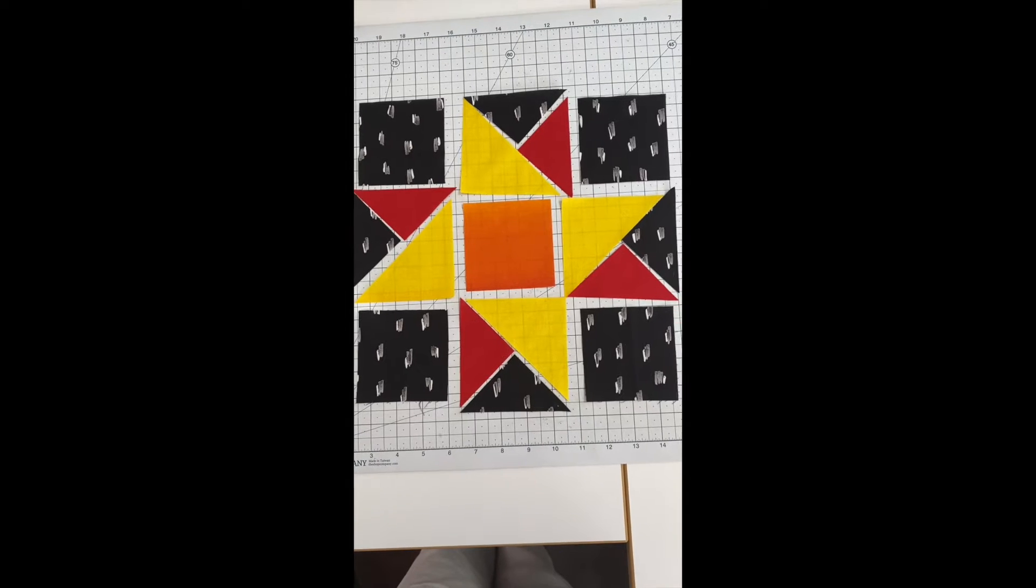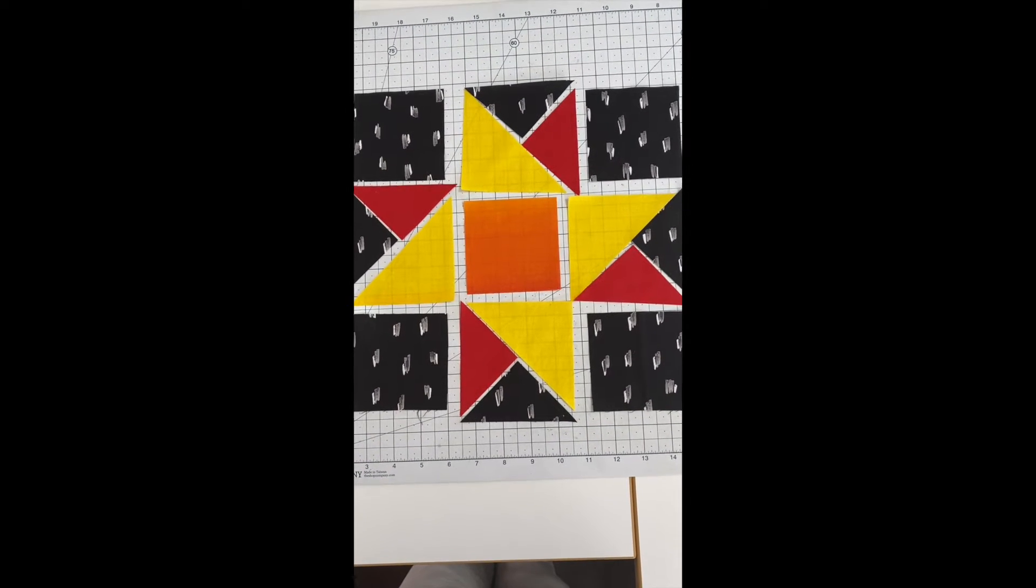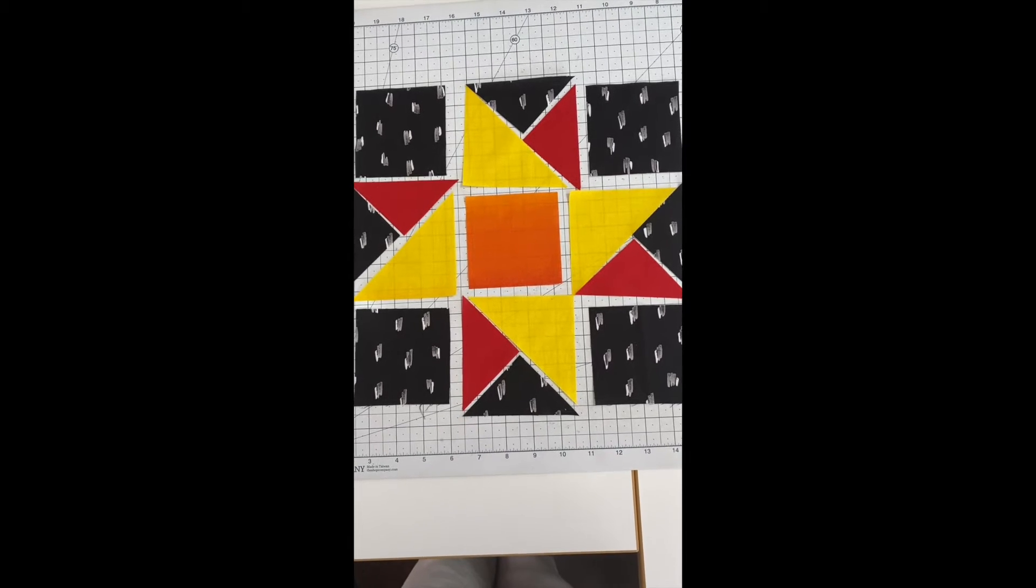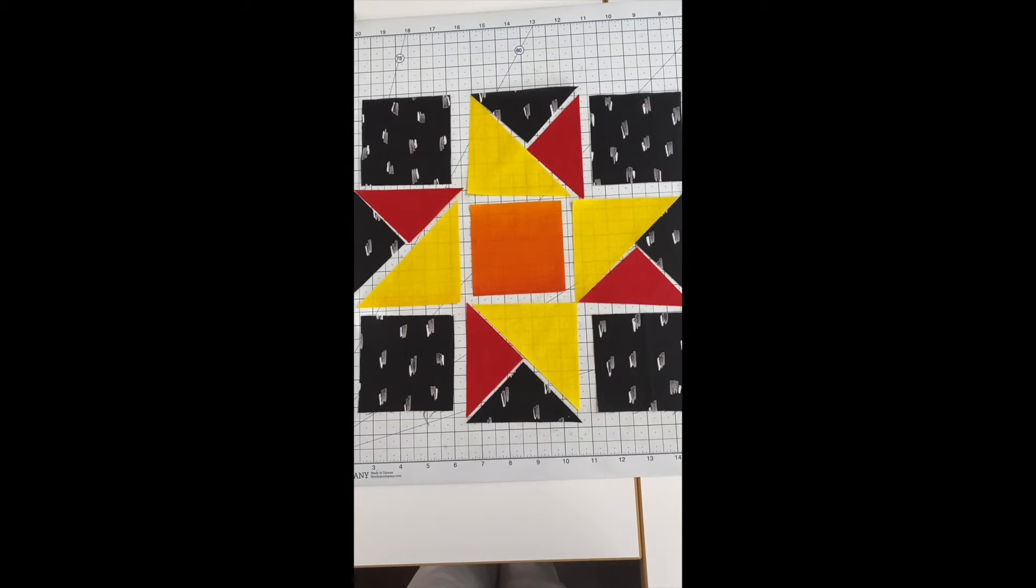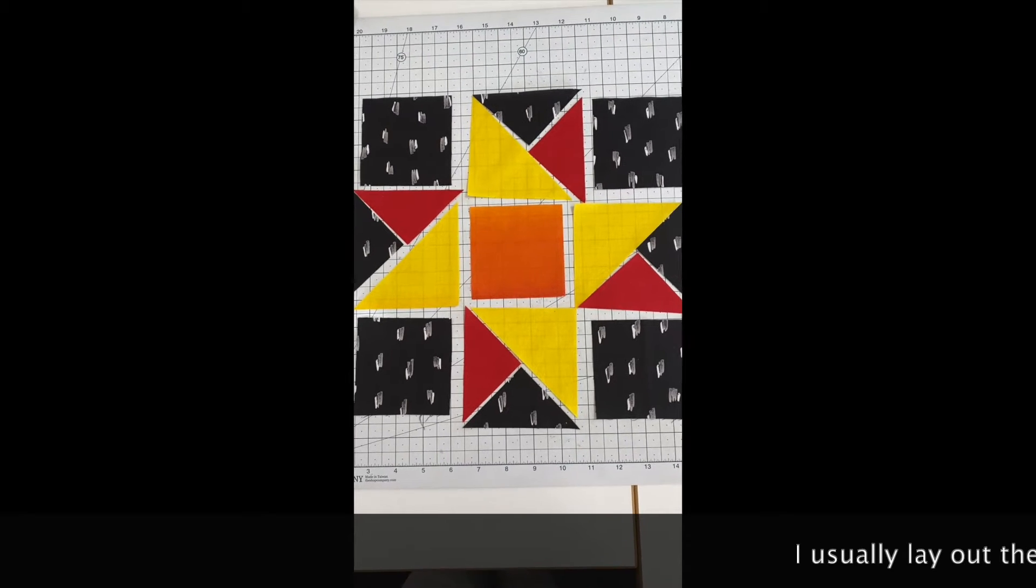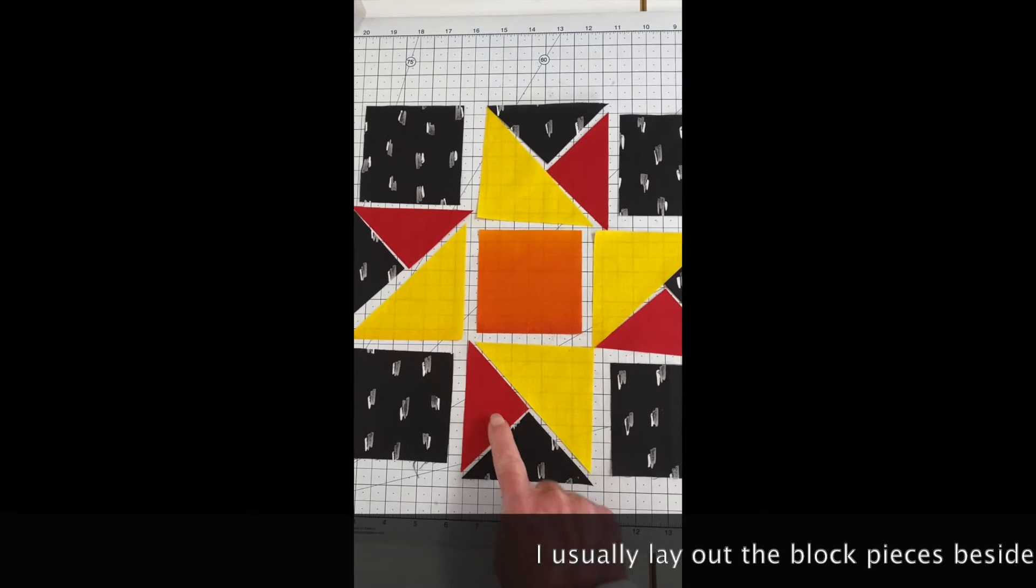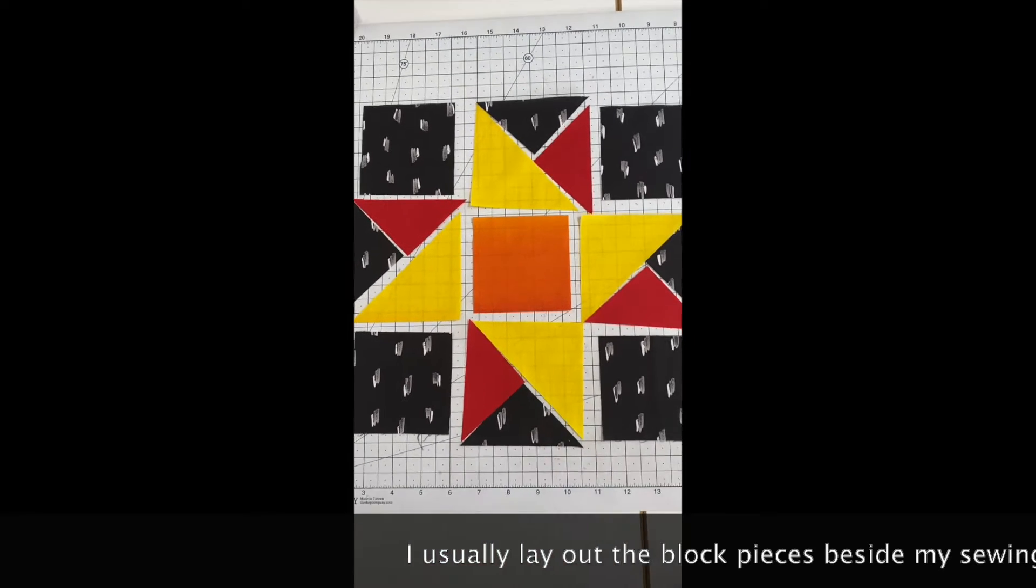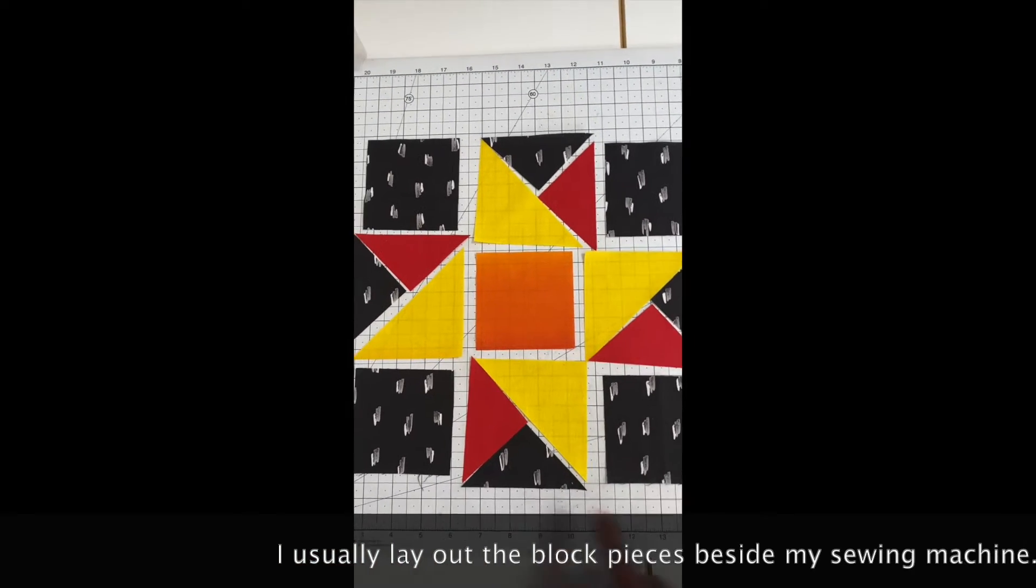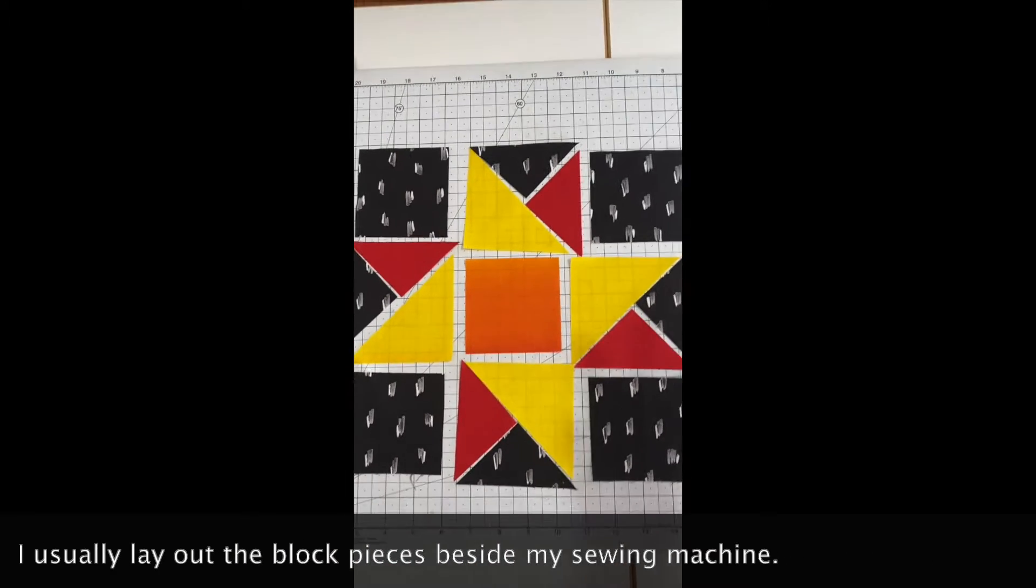Now I have my triangles and my squares all laid out. And I have to tell you, I always have difficulty with this friendship star type pattern, getting the triangles in the right place. I had trouble doing these red and black, especially when I made the other ones. So for me, it just helps to lay them all out.